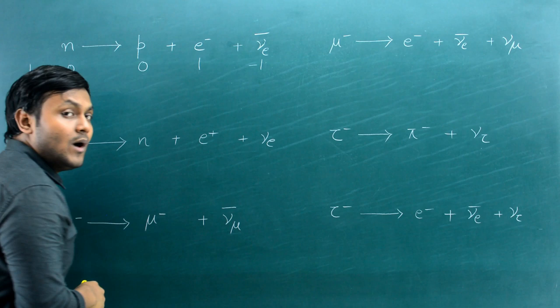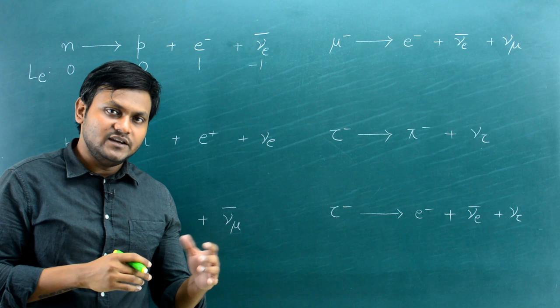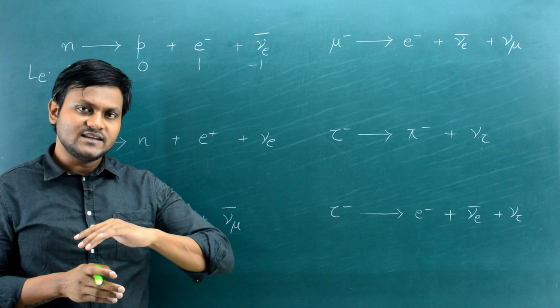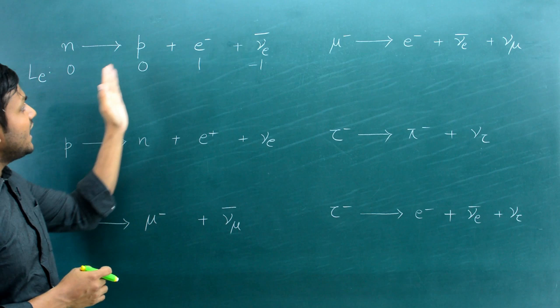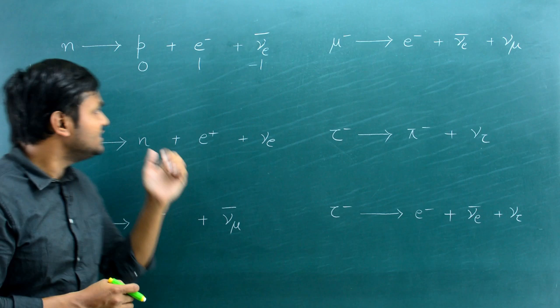These quantum numbers are additive — you add them on the left-hand side and right-hand side and check whether the summation is conserved. On the left-hand side the electron lepton number is 0; on the right-hand side it is 1 + (−1) = 0. So the electron lepton number is conserved in this case.